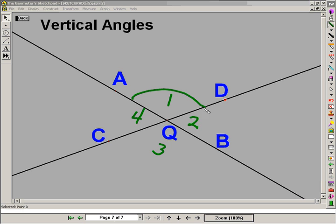But angle 1 and angle 2, their sum would be 180. Angle 2 and angle 3, their sum would be 180. Therefore, by subtracting angle 2 from both of those sums, angle 1 must be the same as angle 3.